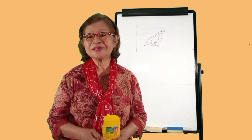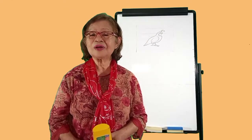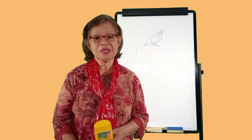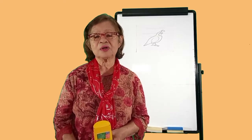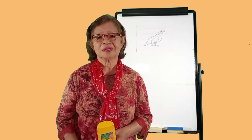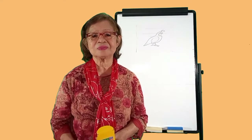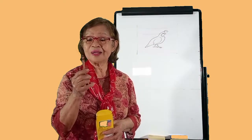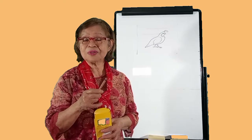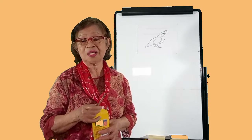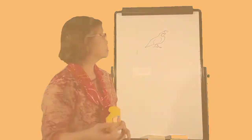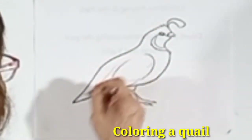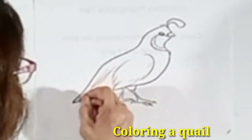Now, class, let's go and color letter Q on the board. It's a picture of a quail that starts with letter Q. Come on, let's color it now. I'm going to color the quail with brown. You can use any color if you wish when you are going to color your quail. I'll start.